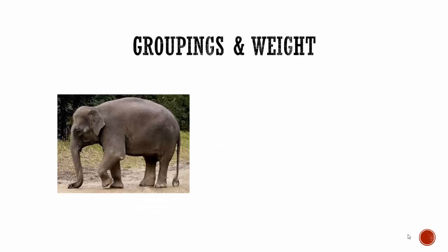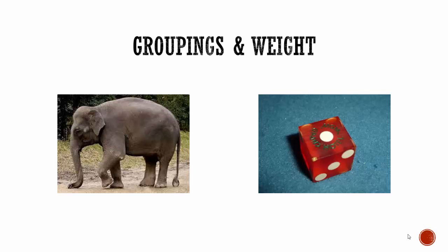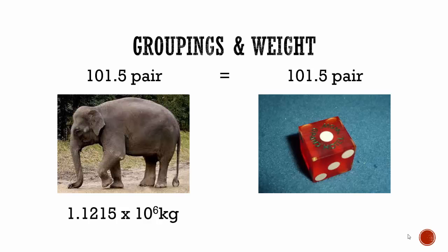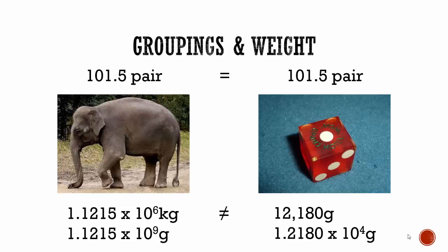In the previous two examples, we looked at elephants and dice. We had 101.5 pairs of elephants and 101.5 pairs of dice — the same number of each object. The elephants weighed just over a million kilograms; the dice weighed just over 12,000 grams. These two masses are clearly not equal. If you put them in the same unit and scientific notation, you'll notice that the elephants are about 100,000 times more massive than the dice.